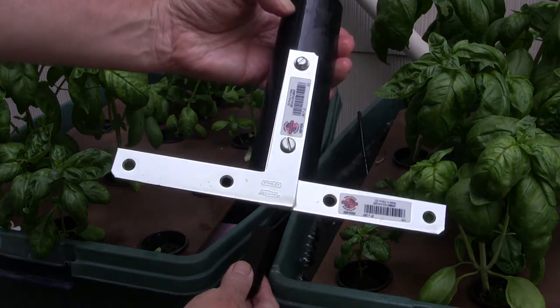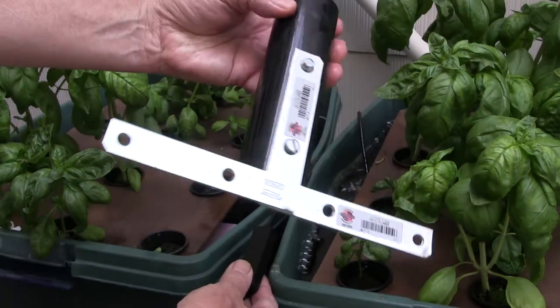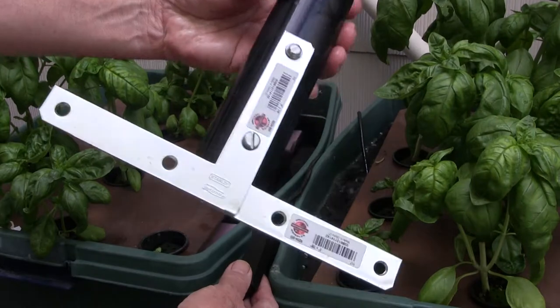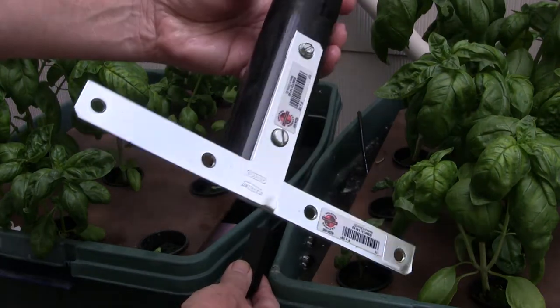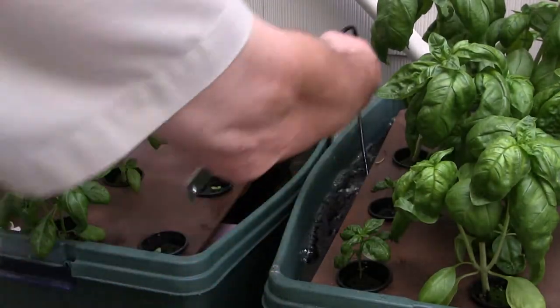I had these angle braces inside my junk box, so I pulled those out, and I drilled some pilot holes and then put these sheet metal screws in there to hold it all together.